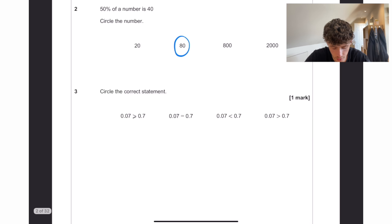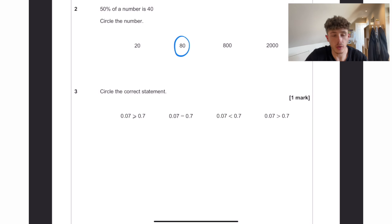Circle the correct statement, 0.7 is bigger than 0.07.